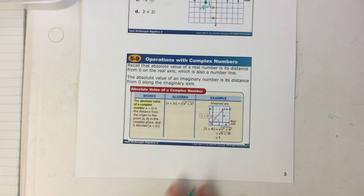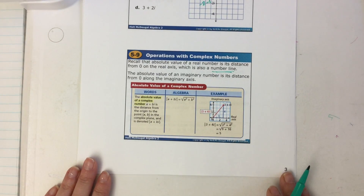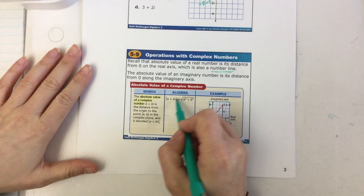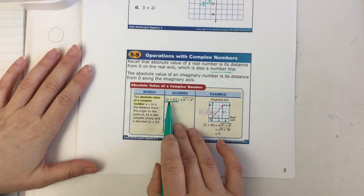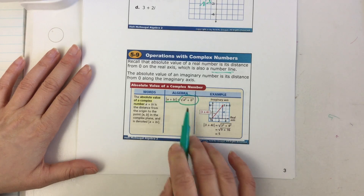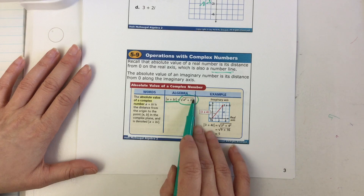So, graphing complex numbers. Now recall: the absolute value of a real number is the distance from zero on a number line — that's what absolute value means, it is the distance from zero. There is a formula to figure out the absolute value of a complex number. If you want to find the absolute value of a complex number, you take the square root of the real number squared plus the imaginary number squared.